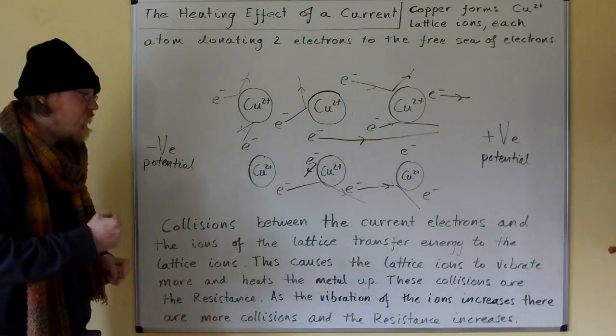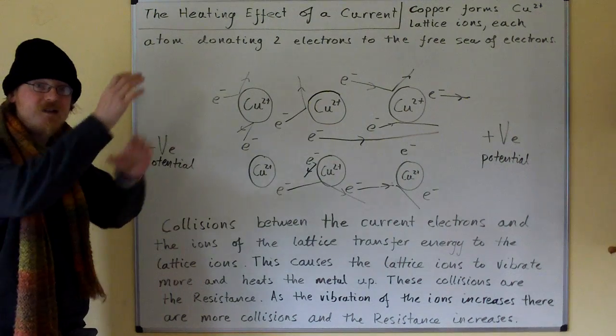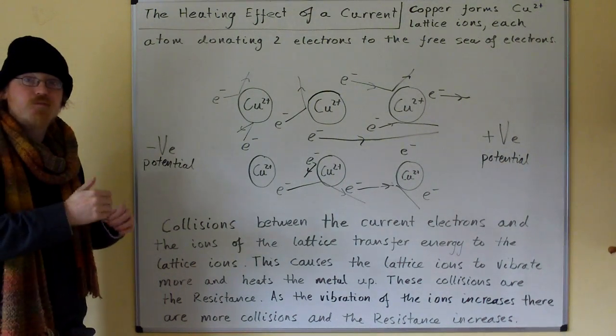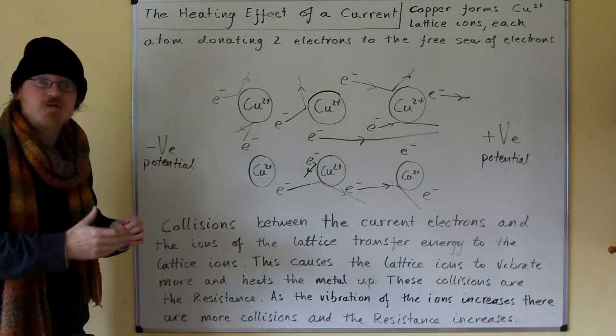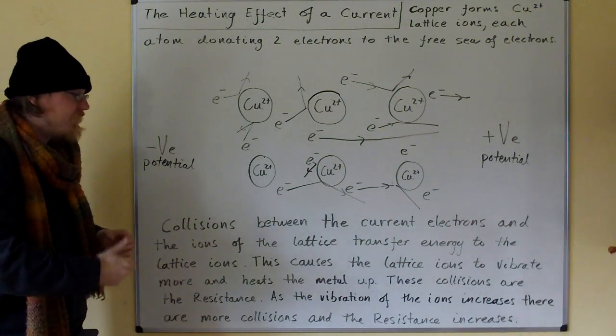As the vibration of the ions increases, there are more collisions because the vibrating ions provide a bigger target for the electrons to hit. So more of the electrons are struck and the resistance increases.